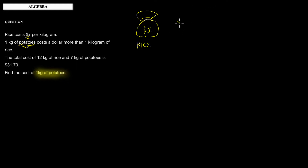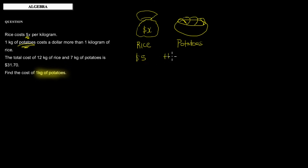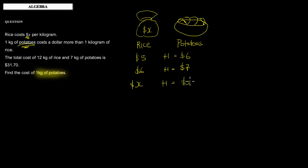The cost of rice is x dollars. For example, if rice costs five dollars then potatoes will cost six dollars because it's always one dollar more. If rice costs six dollars then potatoes costs seven dollars — always one dollar more. So the cost of rice is x dollars, therefore the cost of potatoes is always going to be x plus one dollars. That would be the cost of a kilogram of potatoes.